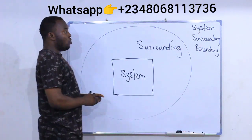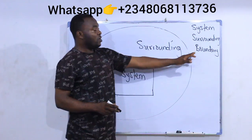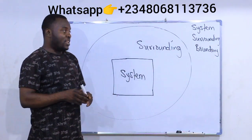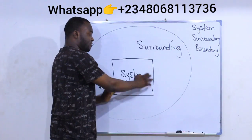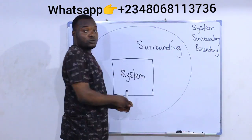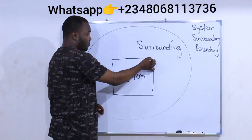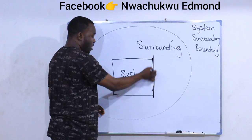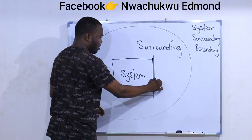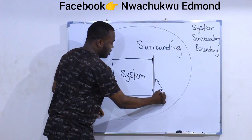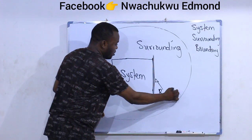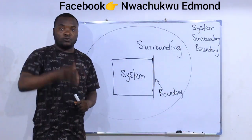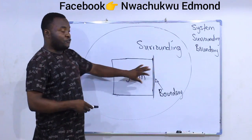When you talk about the boundary, the boundary is the imaginary line that separates the system from the surrounding. This surface here is considered as the boundary — it is the line that separates the system from the surrounding.